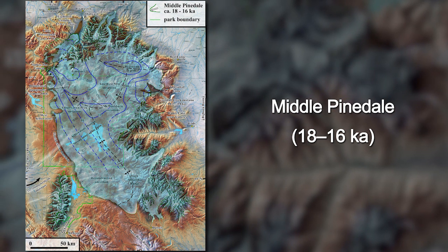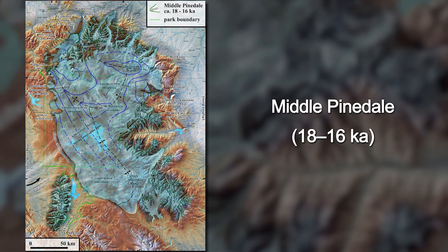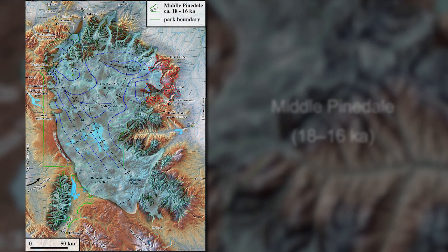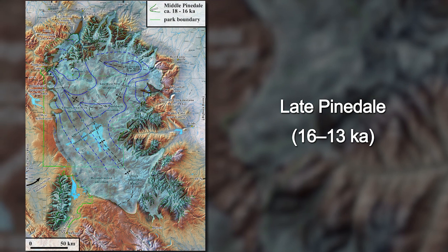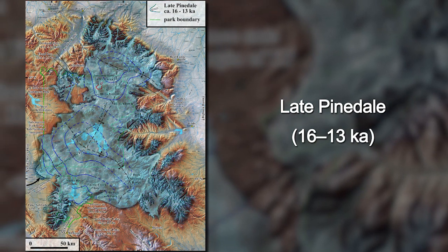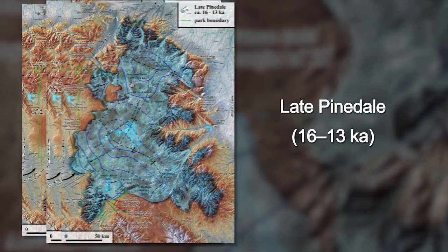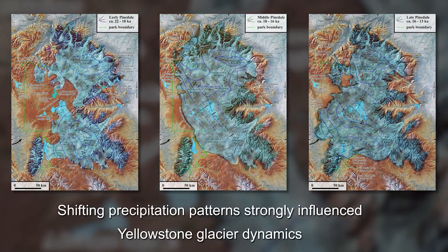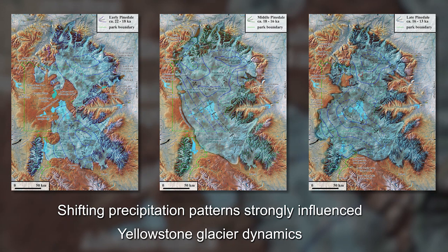By contrast, terrain east and downwind of the ice cap summit was placed in a precipitation shadow, resulting in ice retreat. During late Pinedale time, the system built southwestward toward its moisture supply, causing glacial advances in the south and west. The evolution of this ice mass suggests that shifting orographic precipitation patterns strongly influenced glacier dynamics.